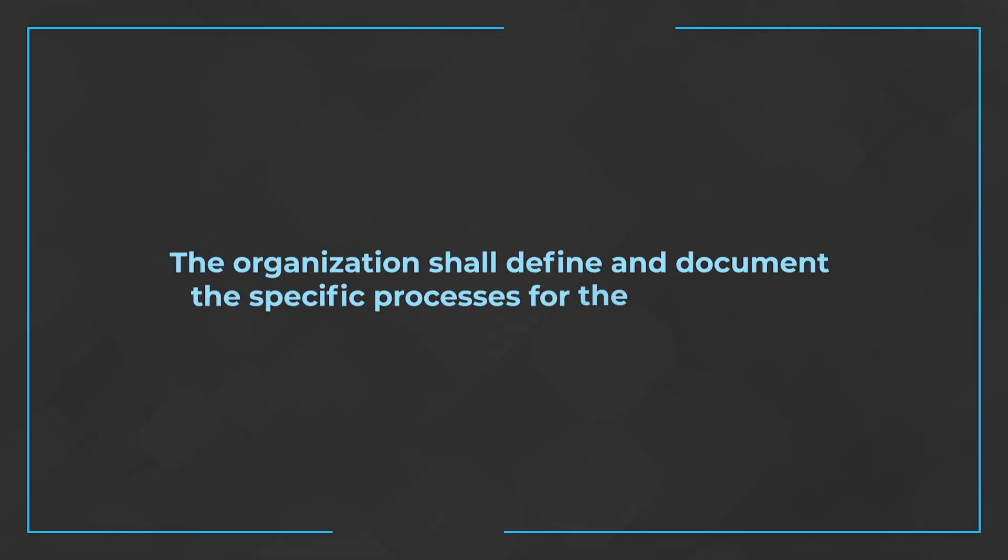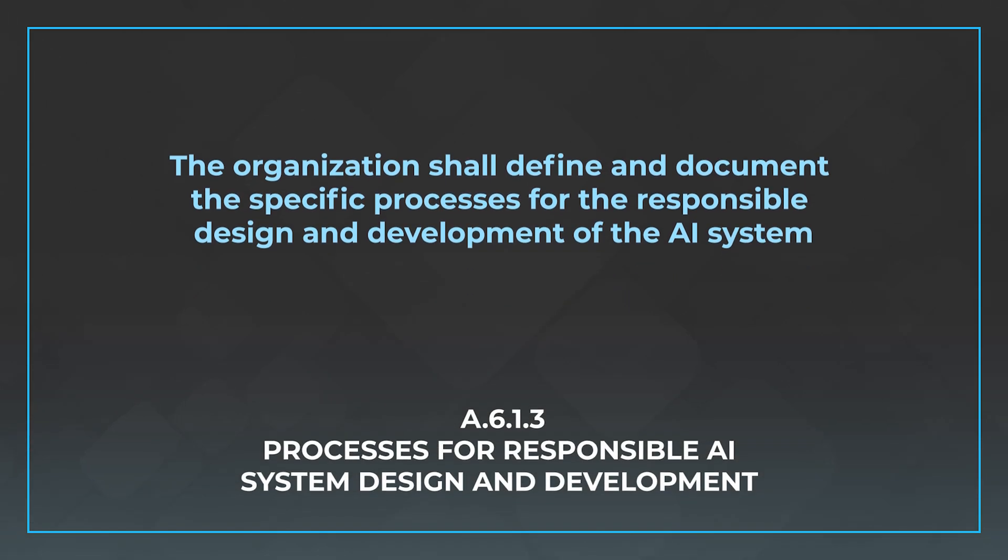The next control is A.6.1.3, processes for responsible AI system design and development. This one is similar, but instead of objectives you need to document processes. Management should sit down and document the processes for responsible AI system design — basically what are the things you need to consider along the design phase. The control states the organization shall define and document the specific processes for the responsible design and development of the AI system, and management needs to articulate how you should think about designing these AI systems and the necessary checks that need to happen during that design phase.